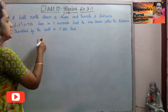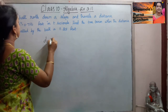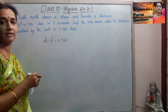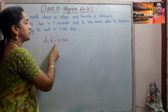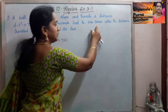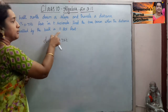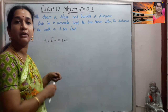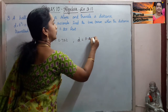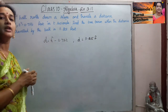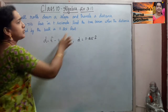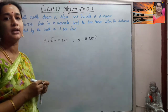The question given is d equals t squared minus 0.75t. Distance travelled equals t squared minus 0.75t is given. We are asked to find the time taken when the distance travelled by the ball is 11.25 feet. When we substitute the value for d and find the value of t, we will get the answer.